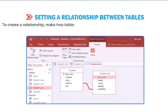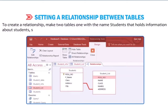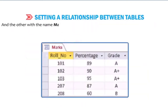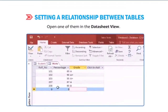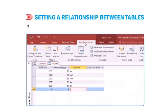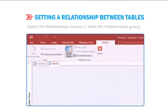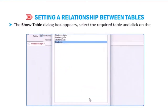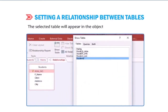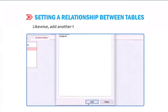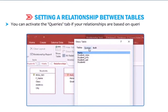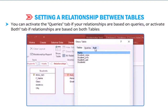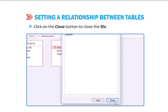To create a relationship, make two tables: one named 'Students' holding role number, full name, class, address, and city; and another named 'Marks' holding role number, percentage, and grade. Open one in datasheet view, click on the Database Tools tab, and select the Relationships button from the Relationships group. The Show Table dialog box appears — select the required table and click Add. The selected table appears in the Relationships window. Add another table similarly. You can activate the Queries tab if relationships are based on queries. Click Close to close the Show Table dialog box.